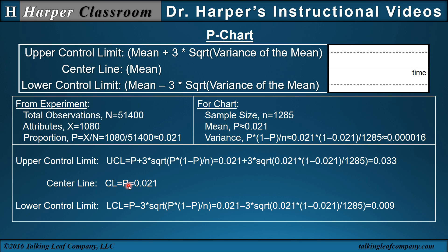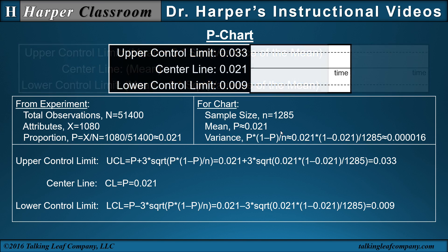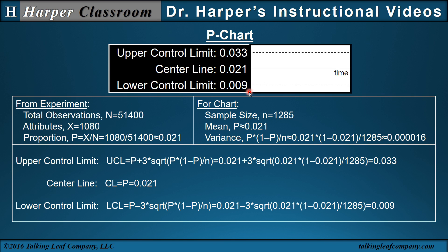For the chart, the centerline is just P = 0.021. The upper and lower control limits are P plus or minus 3 times the square root of the variance of the mean. So the upper control limit is 0.033, and the lower control limit is 0.009. These define the upper and lower control limits and the centerline of the P-chart.